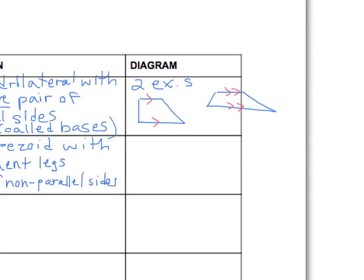So for an isosceles trapezoid, we need to not only pay attention to our parallel markings, but we need to pay attention to tick marks or measurements that call those legs congruent.